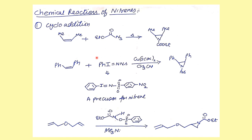Similarly, an iodine compound bearing a nosyl group (a para-nitrotoluene sulfonyl group, which is a good leaving group) acts as a nitrene precursor. When this compound is treated, the entire leaving group departs to generate the nitrene in situ, which then adds to an olefin to give the aziridine. These are two important examples of nitrene addition to alkenes.